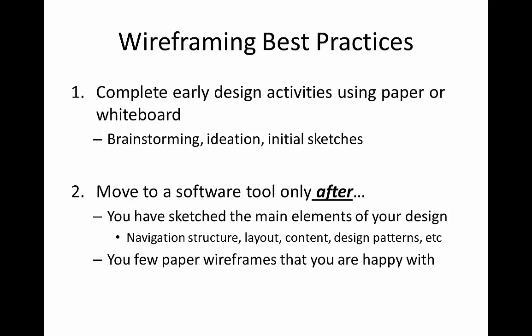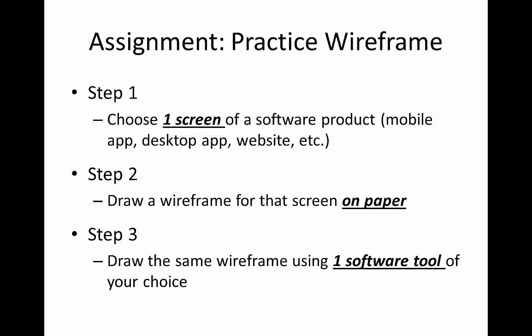So, that's all the information I'm going to throw at you today. What am I expecting you to do now? You've got an assignment to work on and some suggested readings. You have a practice wireframe assignment: first, choose a software product — a mobile app, a desktop app, a website, really anything you want. Choose just one screen or one view. Get a piece of paper, or maybe use the whiteboard at the front of the class, and draw by hand a wireframe just for that one screen. Once you're happy with your hand-drawn wireframe, for step three you can choose a software tool and draw that same wireframe using the software tool. This will be due on Thursday — check all the details on Canvas.